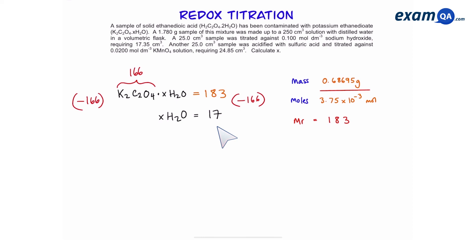So x times H2O equals 17. And finally we're going to divide by water to work out the value of x. This gives us 0.94 recurring and of course x has to be a whole number so the closest integer is 1.